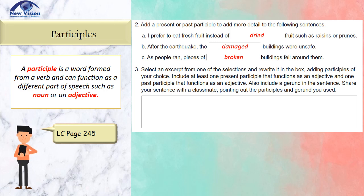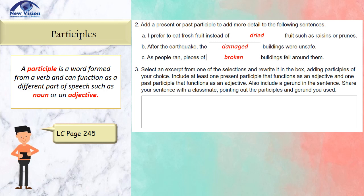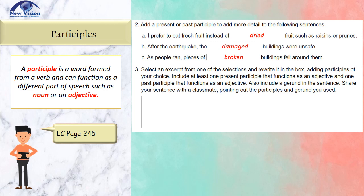For number three, select an excerpt from one of the selections and rewrite it in the box, adding participles of your choice. Include at least one present participle that functions as an adjective, and one past participle that functions as an adjective. Also include a gerund in each sentence. Share your sentences with your classmate by pointing out the participles and gerunds you used. You can freely send your answer to your WhatsApp group. Here is a possible answer.